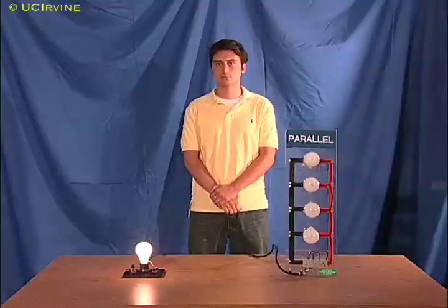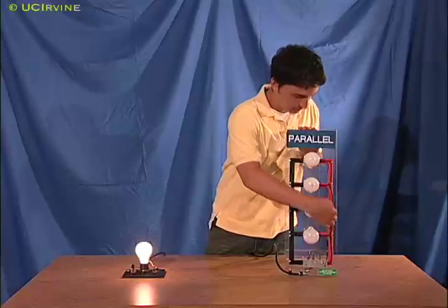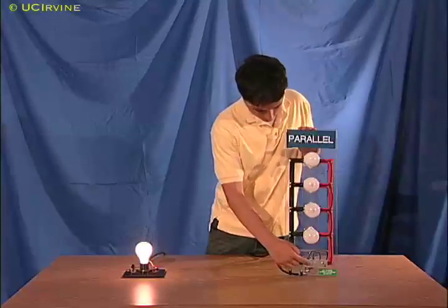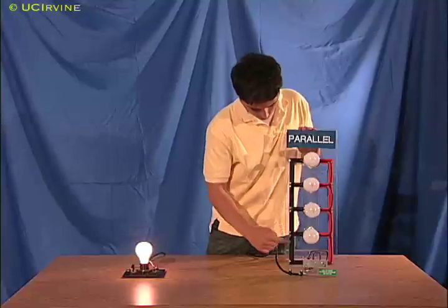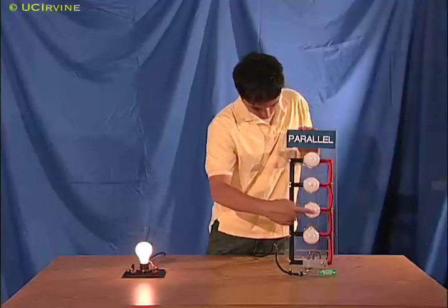Now the four light bulbs are in parallel. All four bulbs will have 120 volts across them. Current can flow through the top bulb, or it can pass through the second bulb, or it can pass through the third bulb, or it can pass through the bottom bulb.